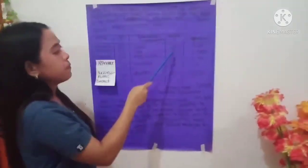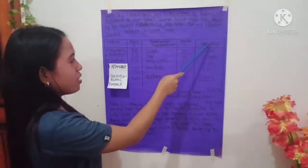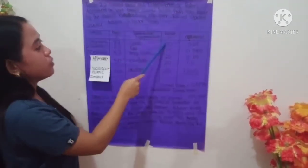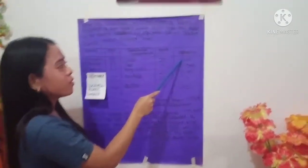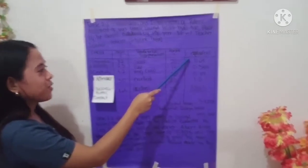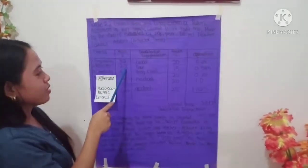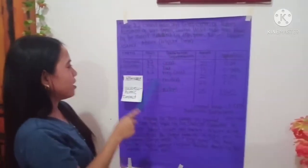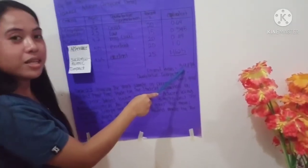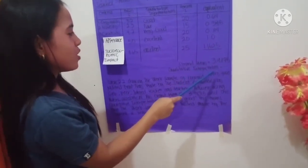The percentages are 20%, 15%, 20%, 20%, and 25%. To get the equivalent, multiply 3.2 by 20% to get 0.64. Divide 200 by 100, and solve all criteria the same way. To get the grand mean, add all the products and identify the qualitative interpretation, which is very good.